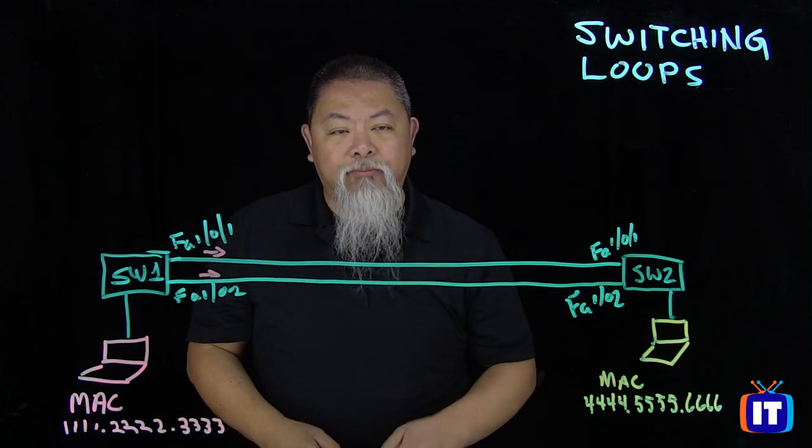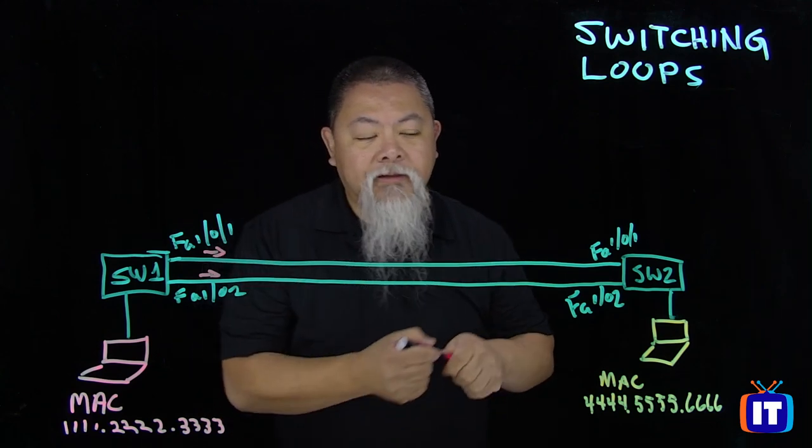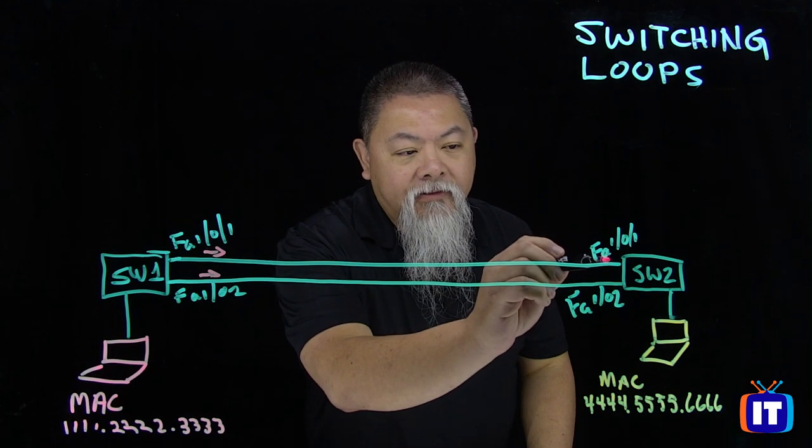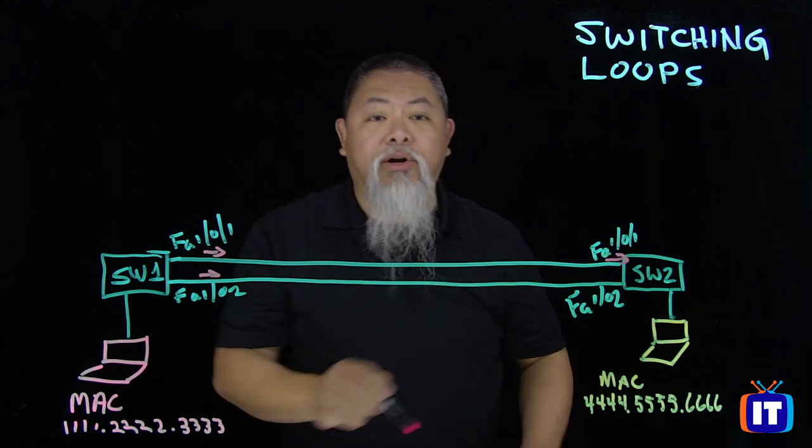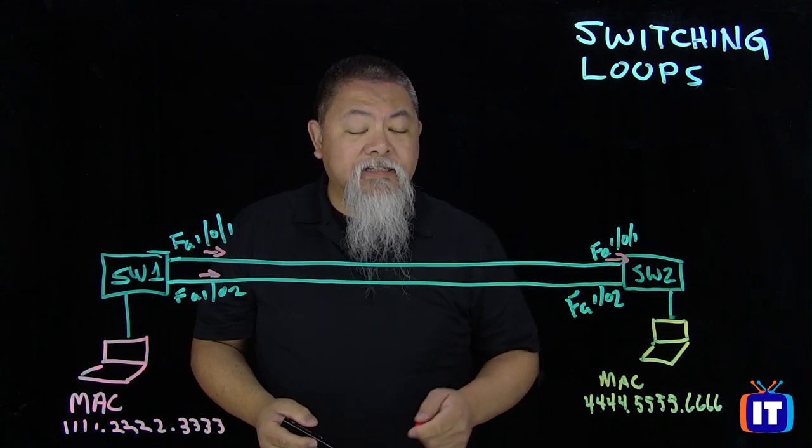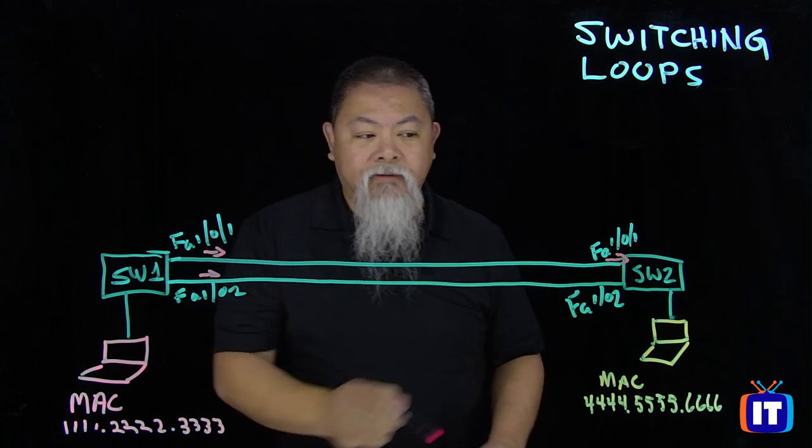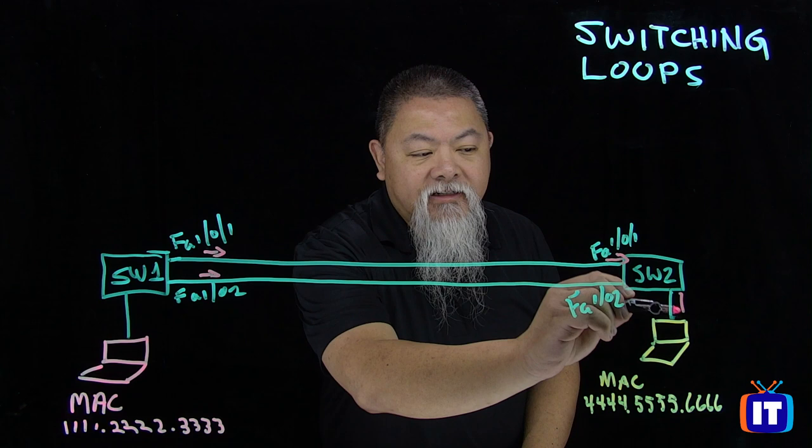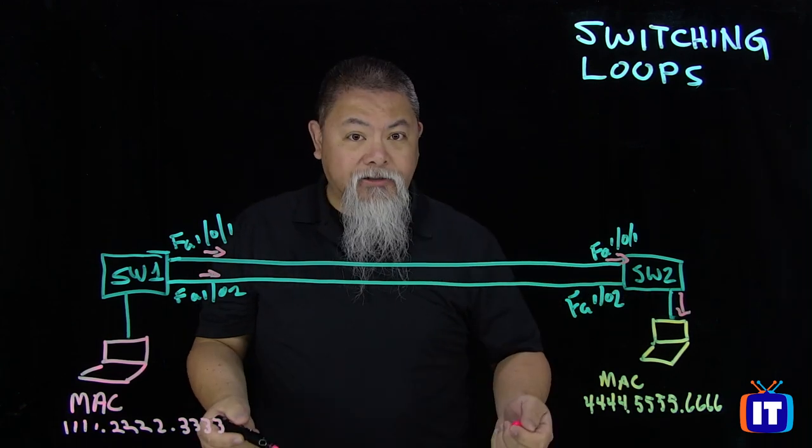Let's just take the example of the top one here as it comes across in here. So when we have this one, this broadcast enter into Switch 2, well, what are the other links it's going to broadcast out of? It will end up sending it down here to its destination, so that's actually good.